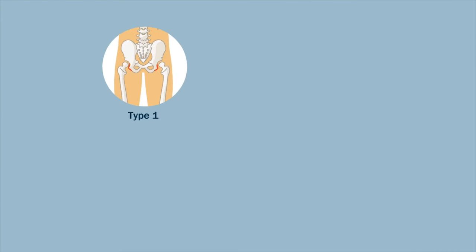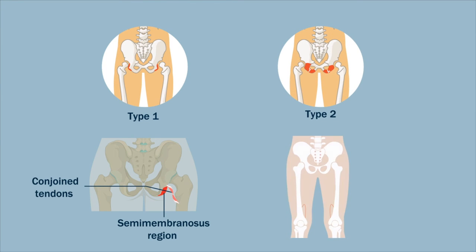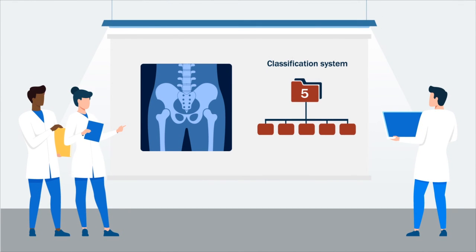Advanced imaging indicated that type 1 fractures involved the semimembranosus and conjoined tendons, whereas type 2 fractures also involved the adductor magnus tendon. This study breaks fresh ground in proposing a classification system for ischial tuberosity fractures that reflects the ossification pattern and tendon attachment.